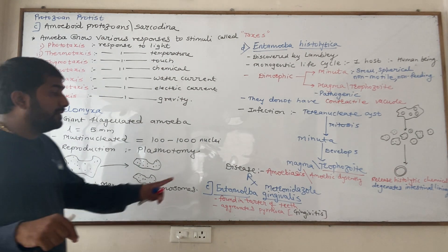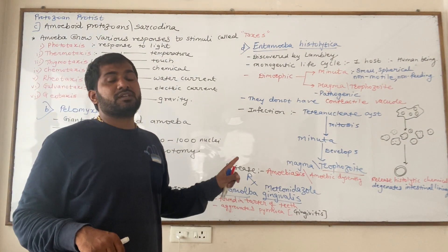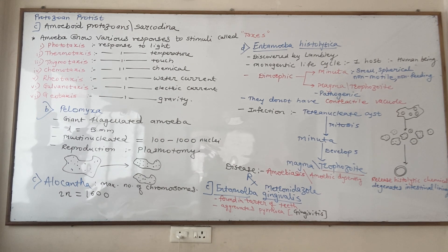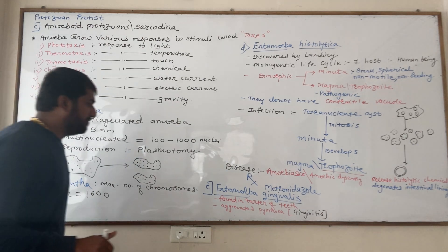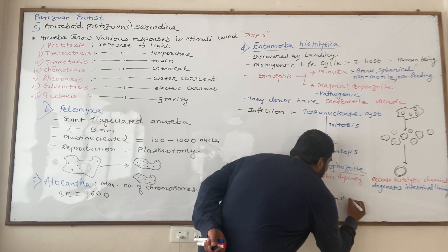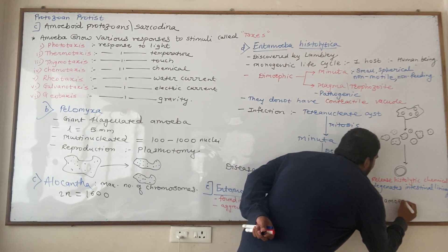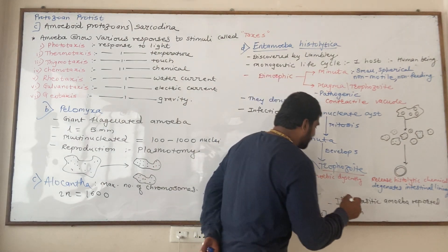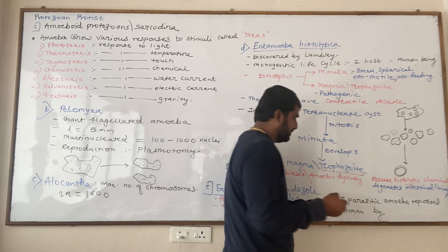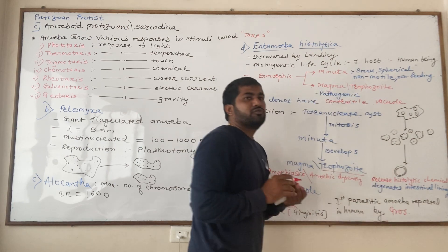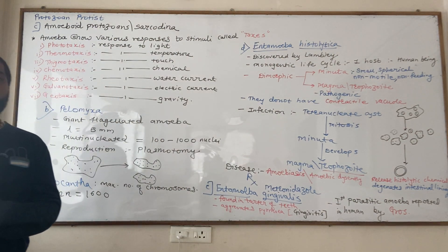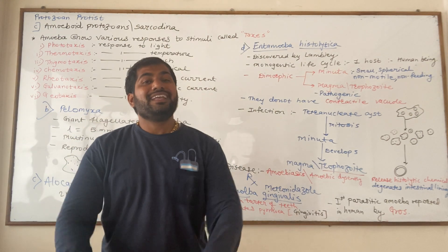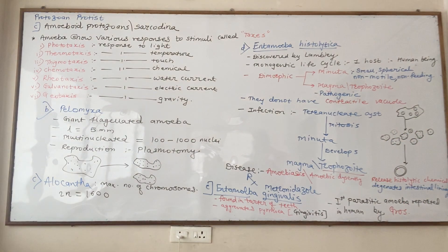Entamoeba gingivalis is the first parasitic amoeba reported in humans, found in the tartar of teeth. It aggravates pyorrhea and causes gingivitis. It was first reported in humans by scientist Gros. This concludes the study of Sarcodina. Only two types remain: ciliated protozoans and sporozoans, which will be covered in the next lecture.